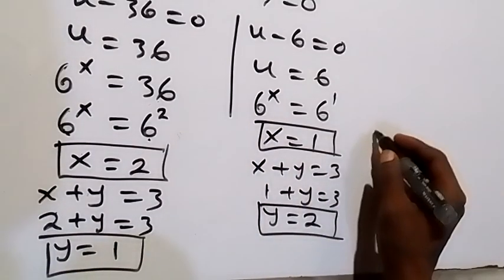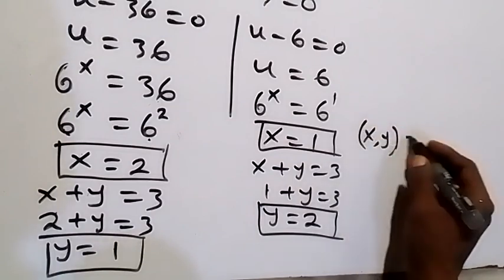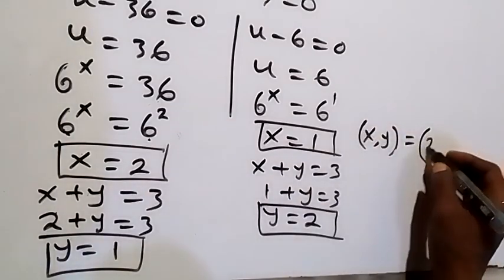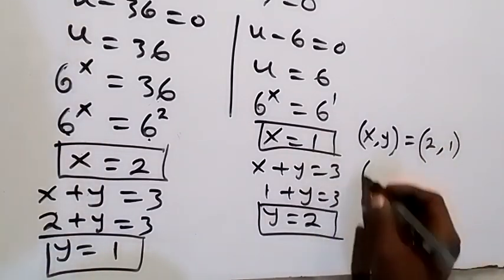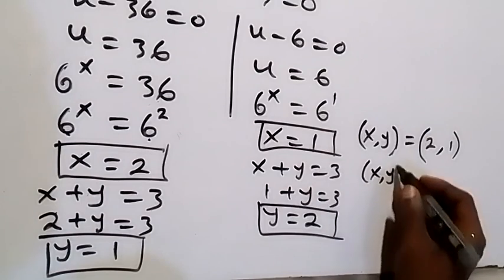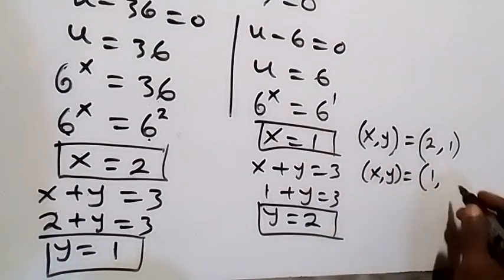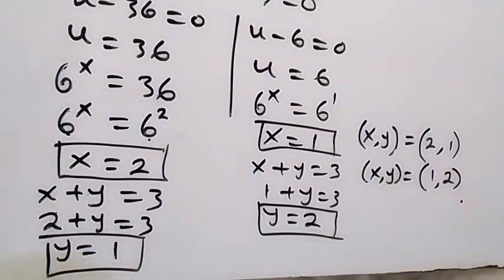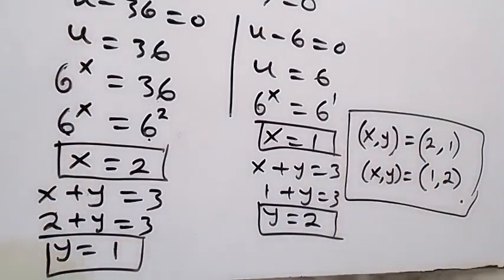So the solutions are: first set (x, y) = (2, 1), and second set (x, y) = (1, 2). We can check by substituting these values into the original equations to confirm they are correct. Thank you for watching.